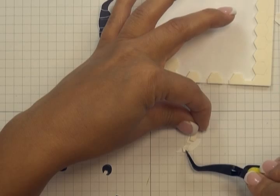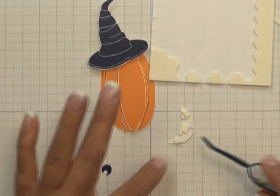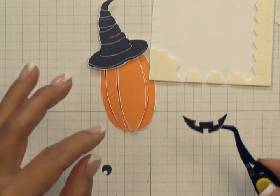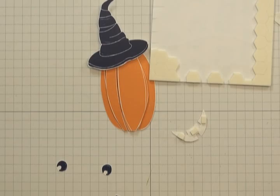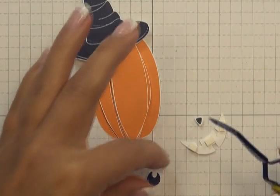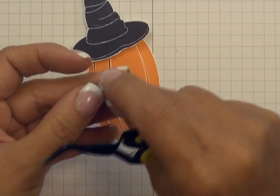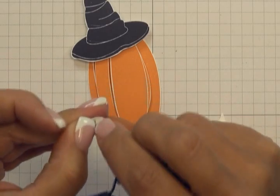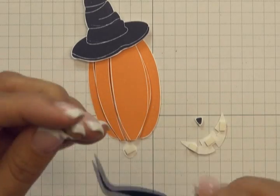So I'm just going to put dimensionals here on the back of the smile and the eyes and the nose. And then we'll be back to stick it on to the jack-o'-lantern. So I've placed dimensionals on the back of all my pieces. Now I'm just going to remove the backing and stick them down.